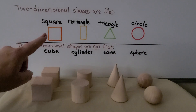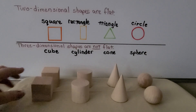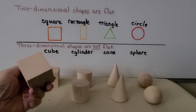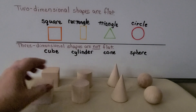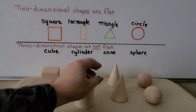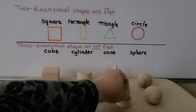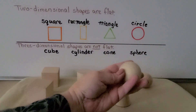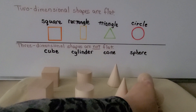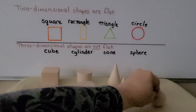We've learned that two-dimensional shapes are flat. Three-dimensional shapes take up space. A cube is like a box. A cylinder is like a can of soup. A cone — it looks like an ice cream cone. And a sphere is like a ball. So these are three-dimensional shapes. They're not flat. We have a cube, a cylinder, a cone, and a sphere.